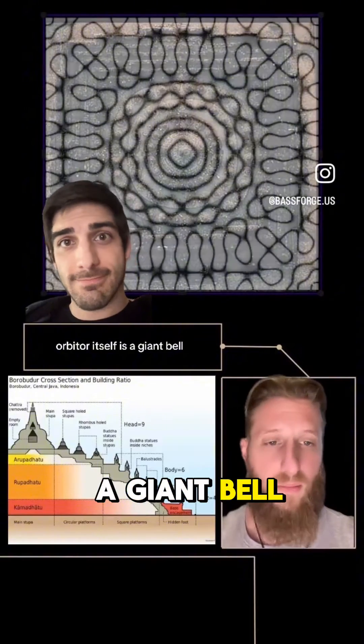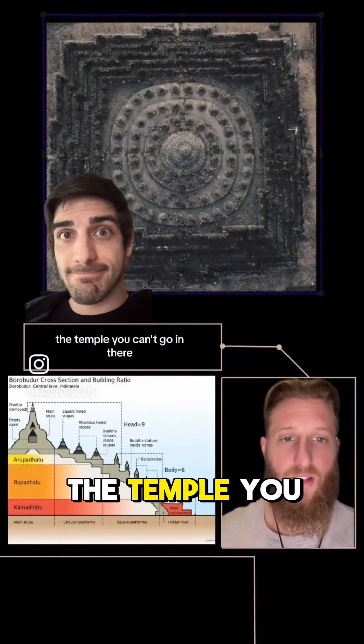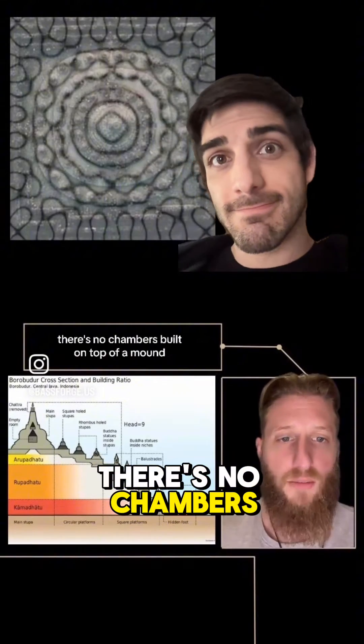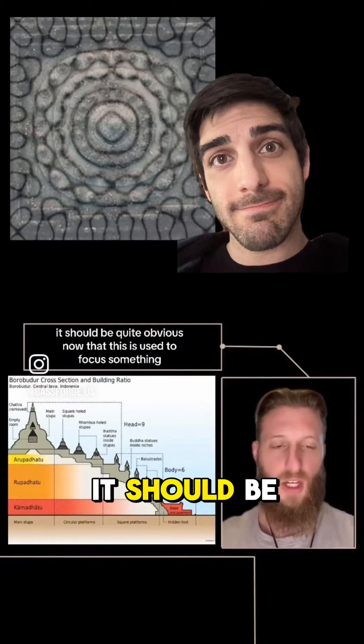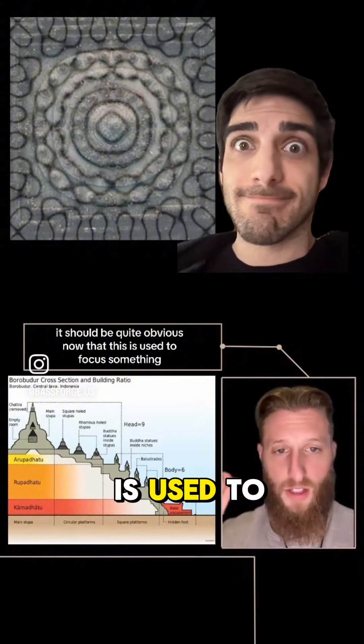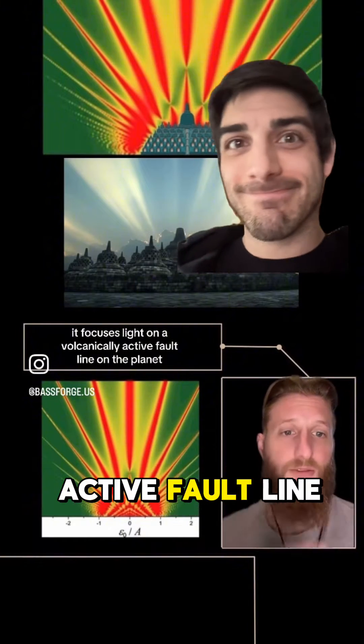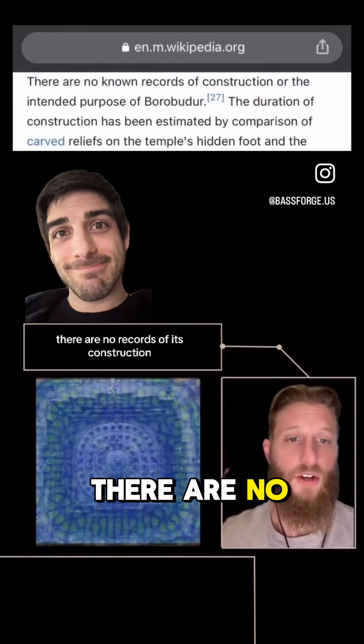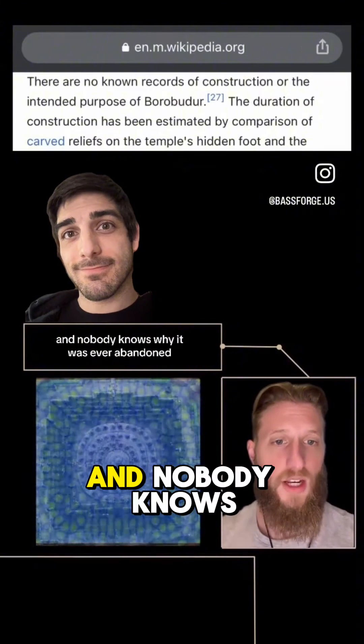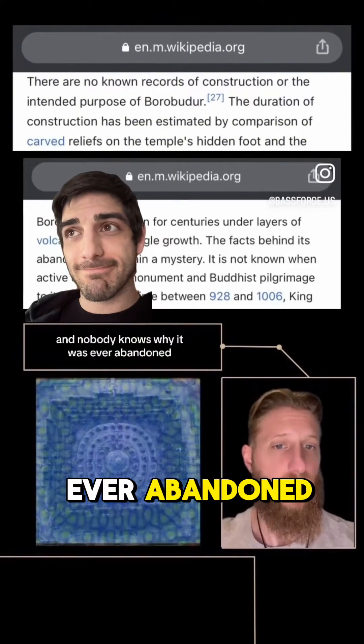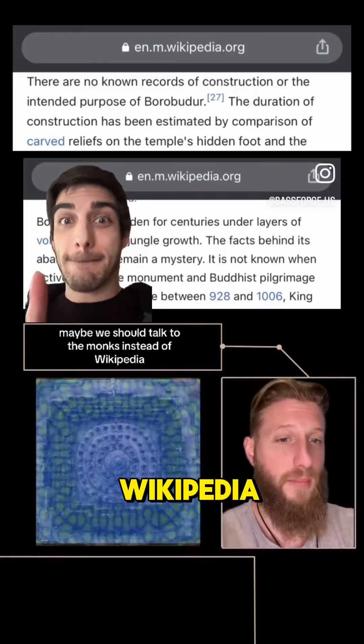Each of the bells is a focal point for the frequency. That's why those circles are not perfect. Borobudur itself is a giant bell. There's nothing inside of it. The temple, you can't go in there. There's no chambers. Built on top of a mound. It should be quite obvious now that this is used to focus something. If it has a resonance, it focuses light on a volcanically active fault line on the planet. There are no records of its construction and nobody knows why it was ever abandoned. What do you think it was for? Maybe we should talk to the monks instead of Wikipedia.